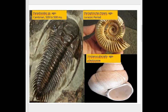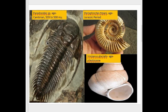Here are some index fossil examples. This species — the paradoxides — is found in the Cambrian age. This species is found in the Jurassic period, and this one is found in the Pleistocene age. These are index fossils because they have short geological time scales — Cambrian, Jurassic, and Pleistocene respectively — but these fossils have wide geographical distributions.